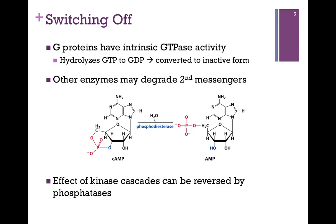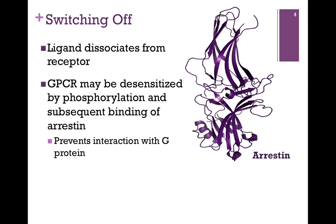In the case of kinase cascades, which involve multiple steps of phosphorylation, we can remove those phosphoryl groups by the action of phosphatases. Of course, when the ligand dissociates from the receptor — our first message — we can't even initiate the signal. However, we might want to inactivate the receptor before the ligand dissociates. We can desensitize a G-protein-coupled receptor by phosphorylating its cytoplasmic domain, which stimulates binding to a protein called arrestin — illustrated here as a ribbon structure composed mostly of beta strands. Arrestin binding blocks the receptor so it can no longer interact with the G-protein, even though the ligand is still bound.